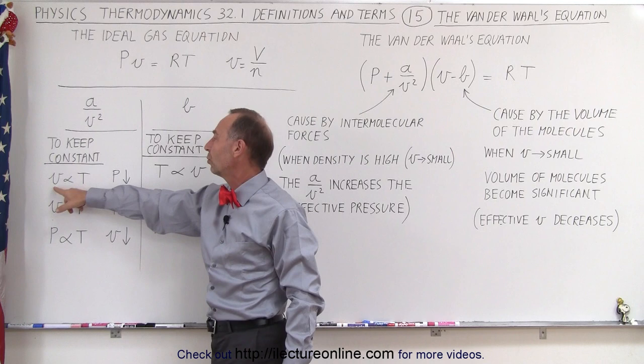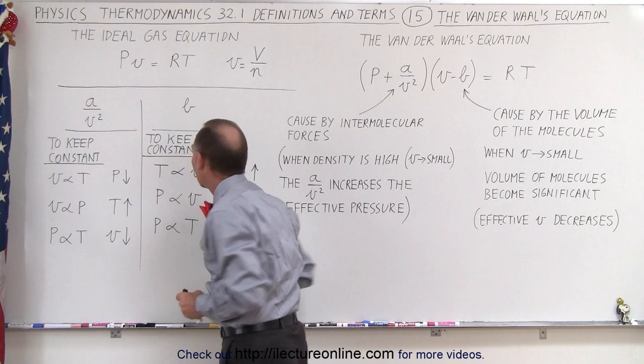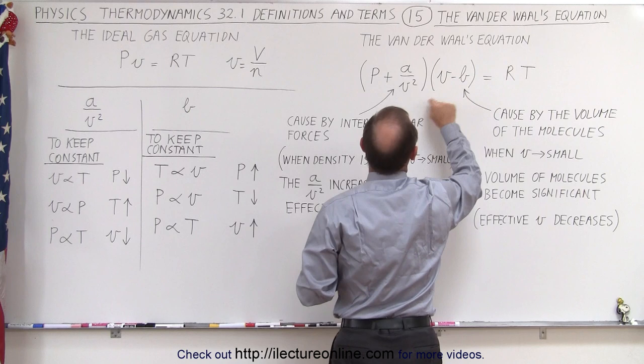Now we do the same with the a over v squared term. Again, what do we need to do to the pressure if we want to keep the volume and the temperature the same? So the temperature doesn't change,